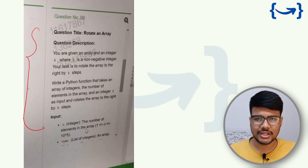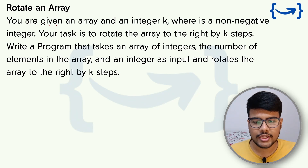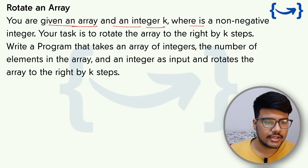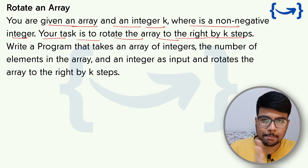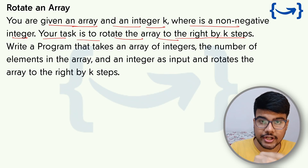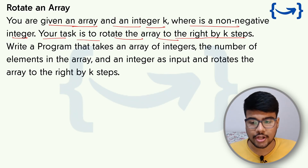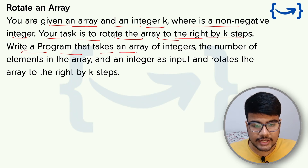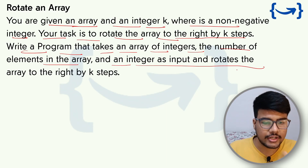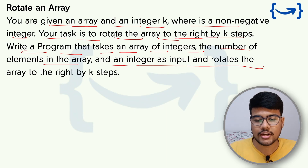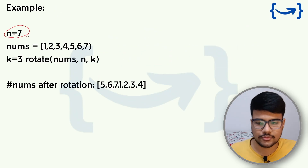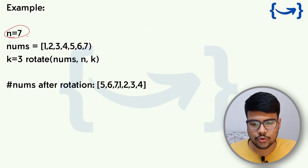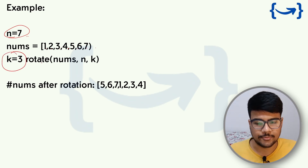Let's start with the second problem. You are given an array and an integer K, where K is a non-negative integer. Your task is to rotate the array to the right by K steps. Write a program that takes an array of integers, the number of elements, and the integer K as input, and rotates the array to the right by K steps.